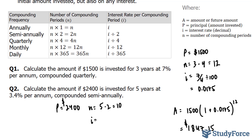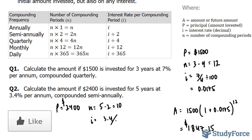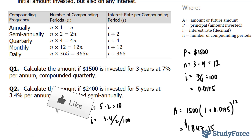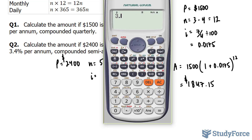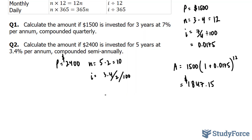For our interest rate i, we take 3.4 divided by 2, then divide by 100 to go from percentage to decimal. The reason we divide by 2 is because it's semi-annually — twice a year. So 3.4 divided by 2 divided by 100 gives us 0.017.